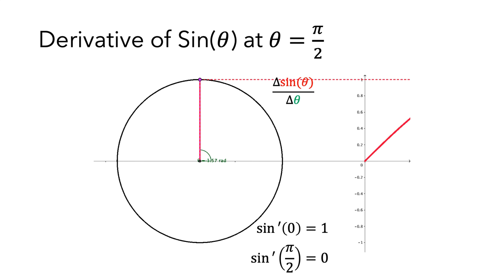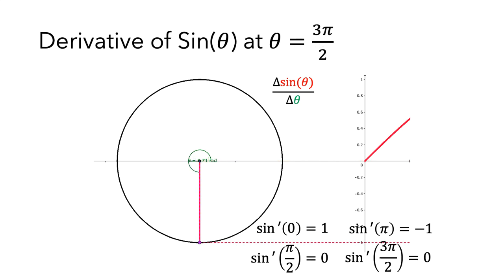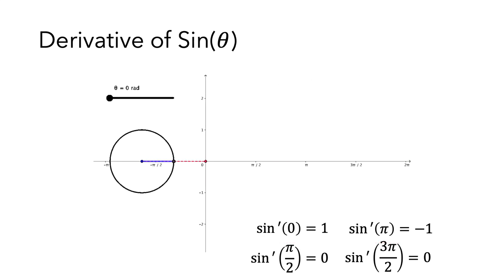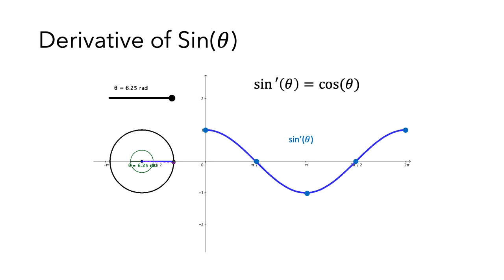If we continue looking at how the value of sine changes as we go around the circle, we'll see that the derivative of sine at theta equals pi will be negative 1, and the derivative of sine at theta equals 3 pi over 2 will be 0. Let's zoom back out and plot some of these derivative values on our coordinate axes. Let's think about what the values of the derivative should be between these points. It turns out that these derivative values for sine of theta all match the values for cosine of theta. So the derivative of sine of theta is cosine of theta.